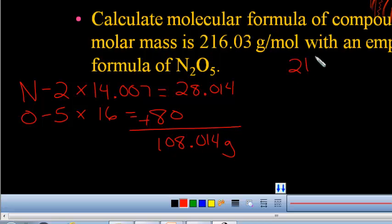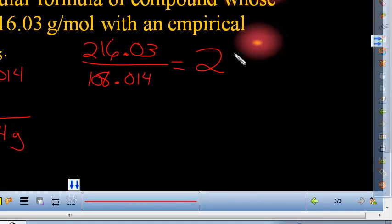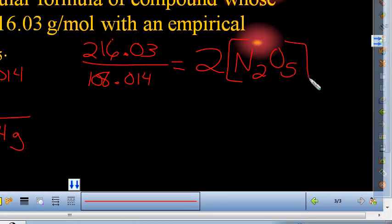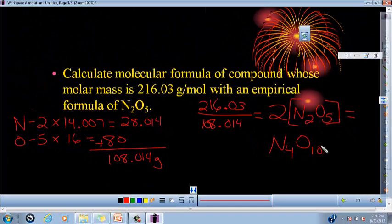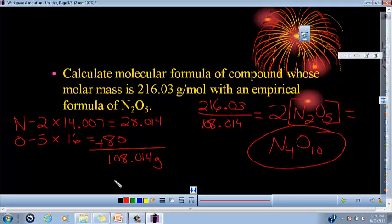Divide by the molar mass of the one you just found, and you get 2. Now, you take your 2, multiply it by the subscripts in your empirical formula to get N4O10, and that is your molecular formula right there.